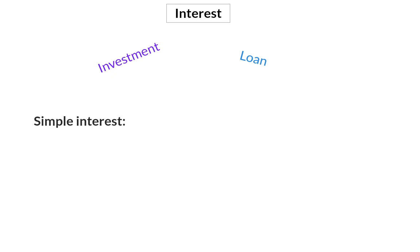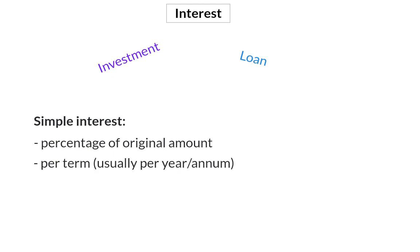Simple interest is a system where this interest is calculated as a percentage of the original amount that was invested or taken out as a loan. This is calculated per term, and in grade 8, this term is usually per year. In this video, we're going to use our prior knowledge on percentages to determine interest.